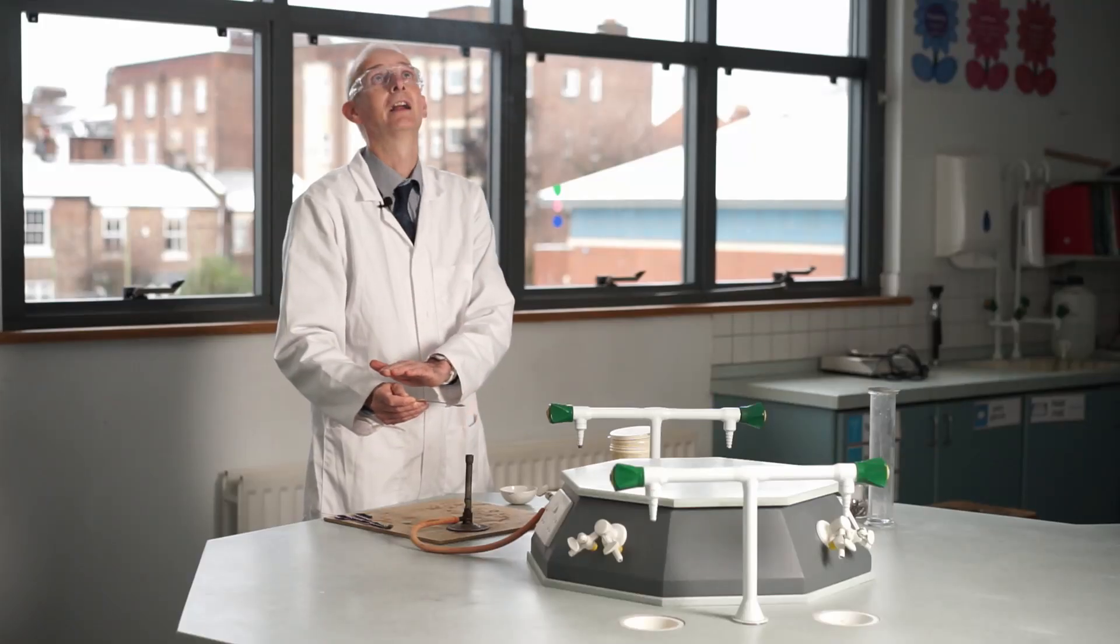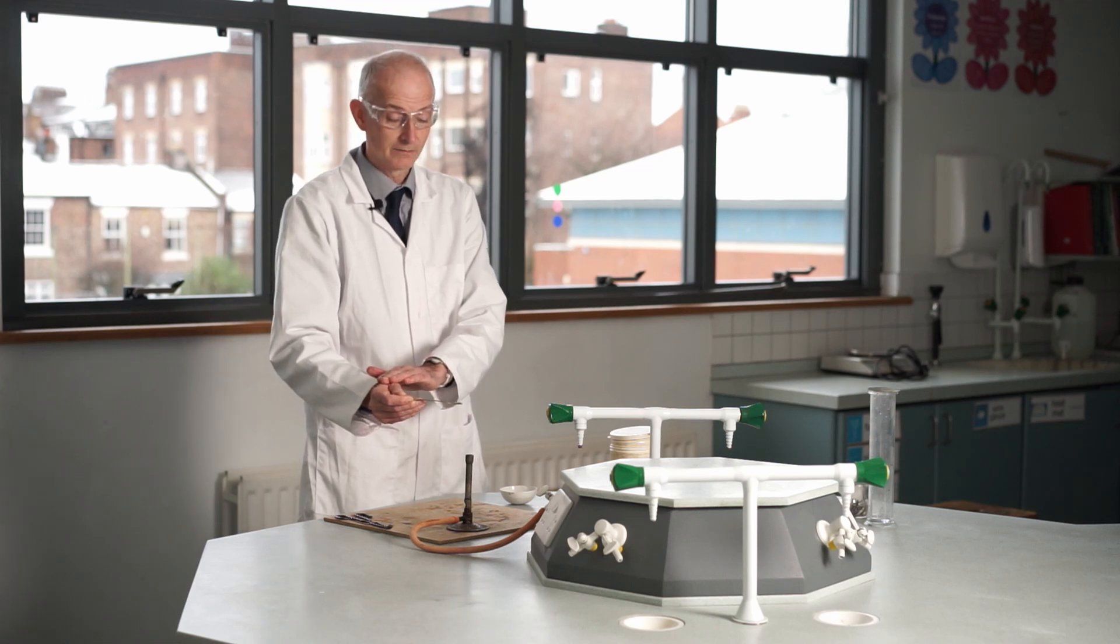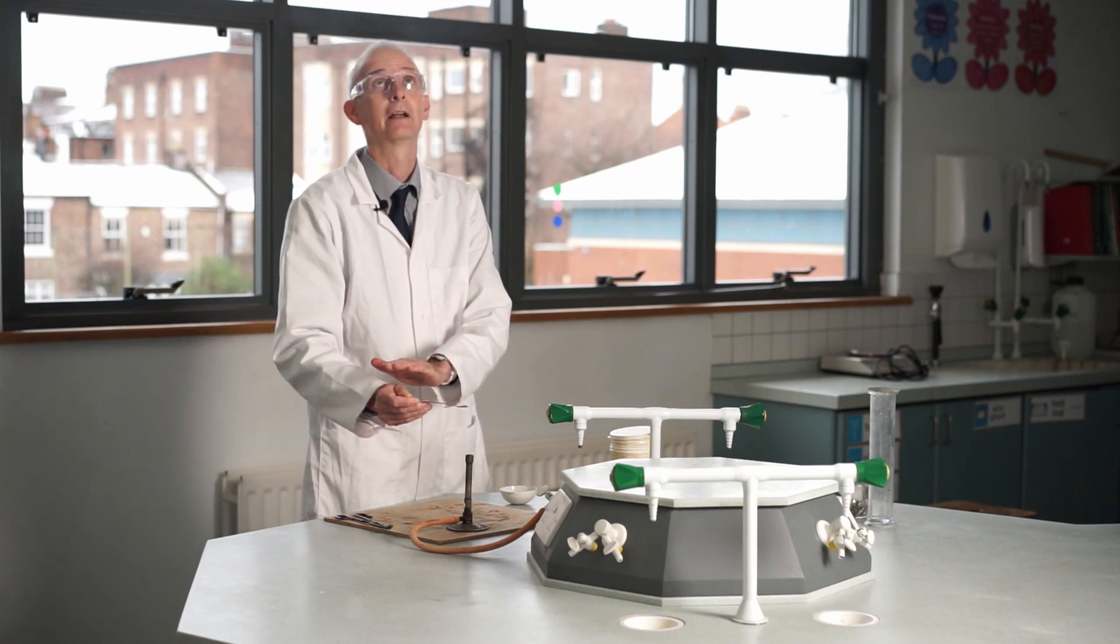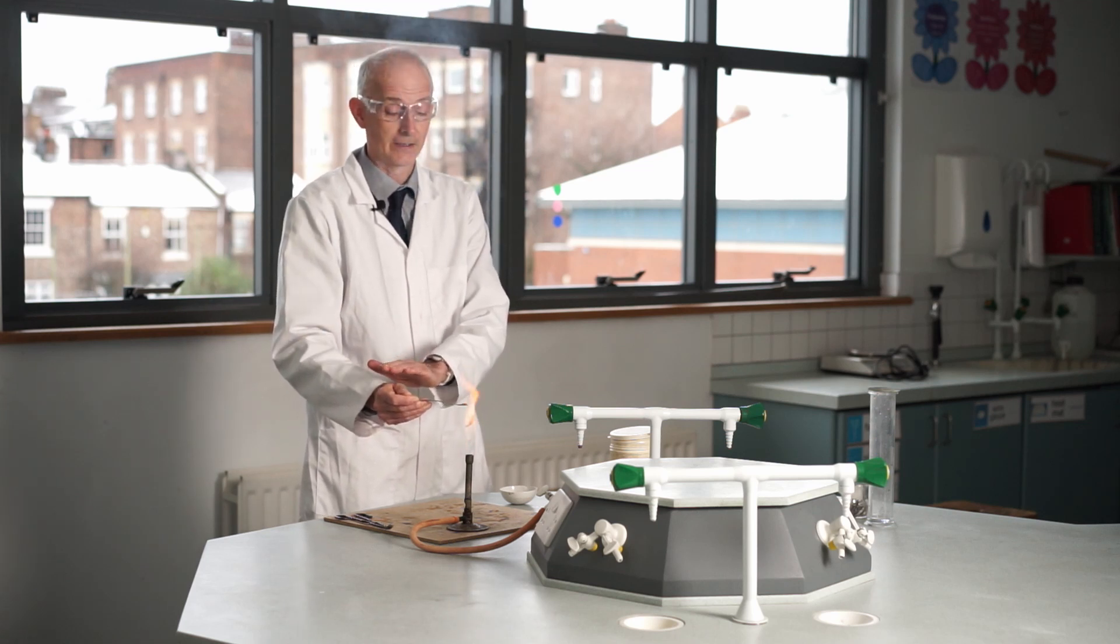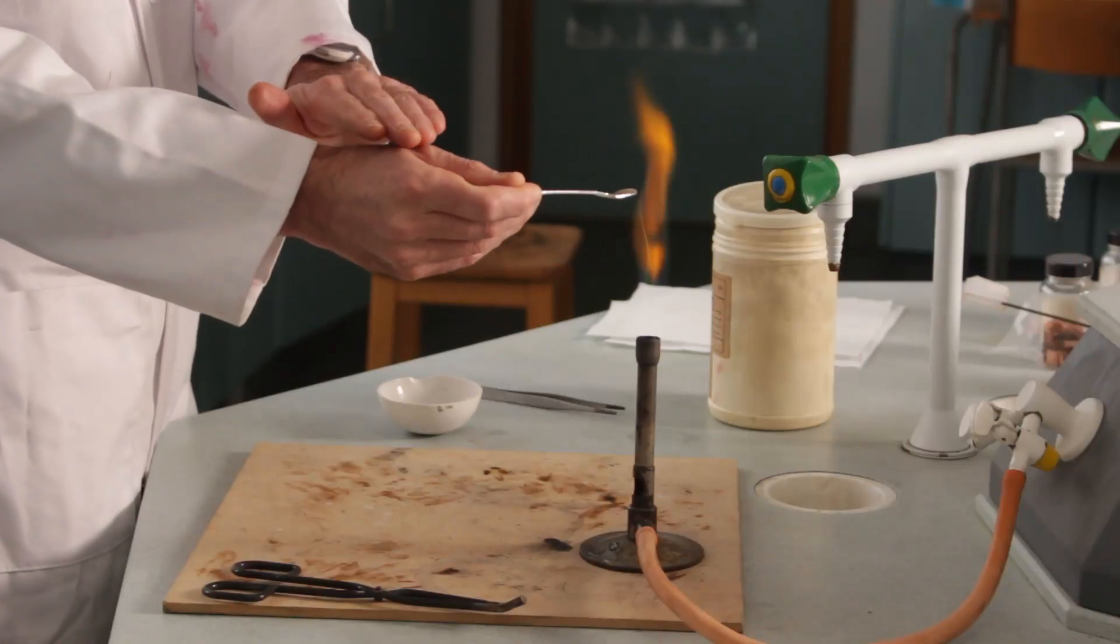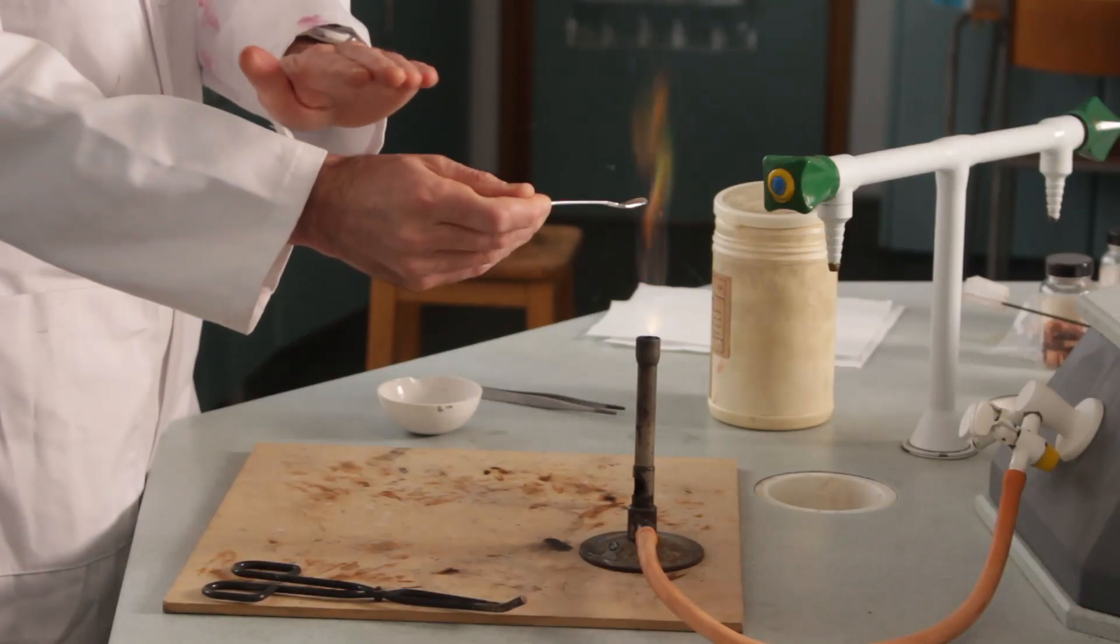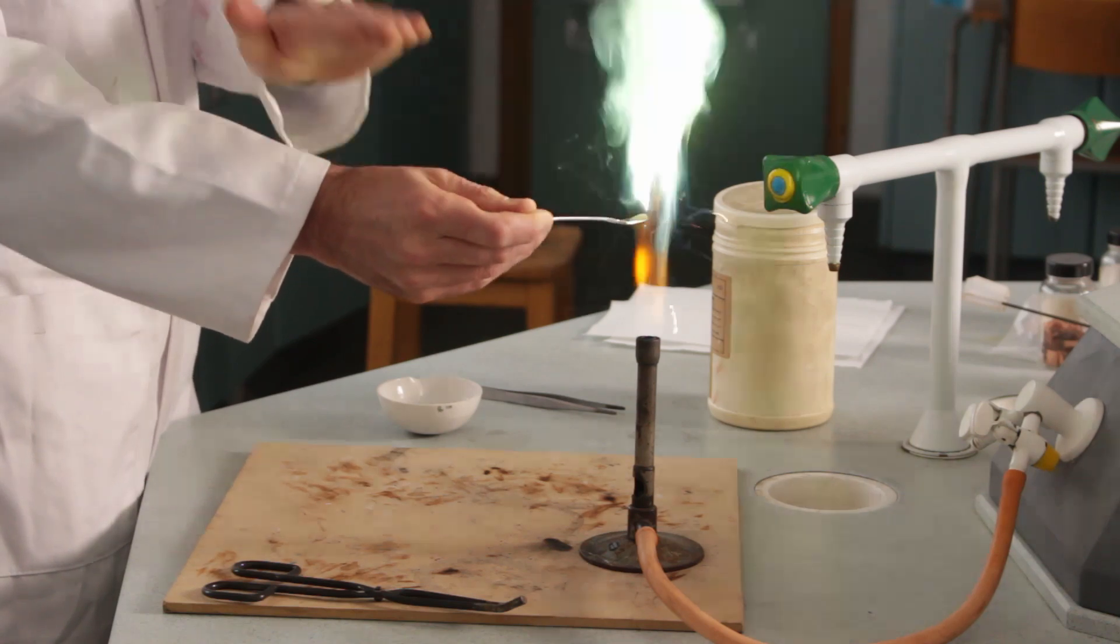It's a nice fine gray powder, and then when I whack it into the flame it ignites with a kind of greeny flame and we get this white smoke being produced. It's reacting with oxygen, so that white smoke is zinc oxide coming off. A nice green flame and then white smoke.